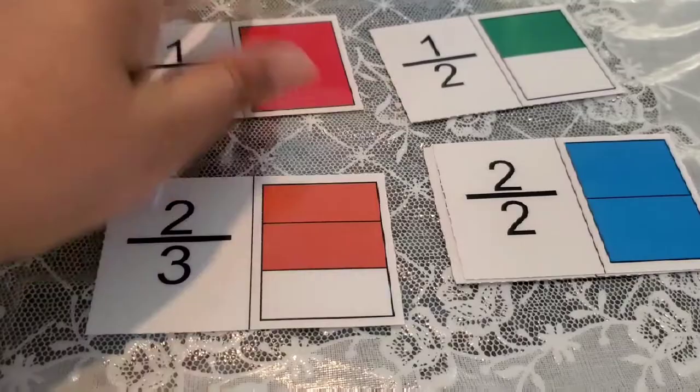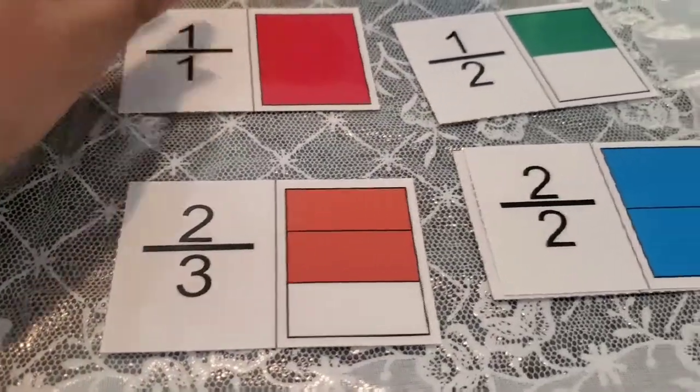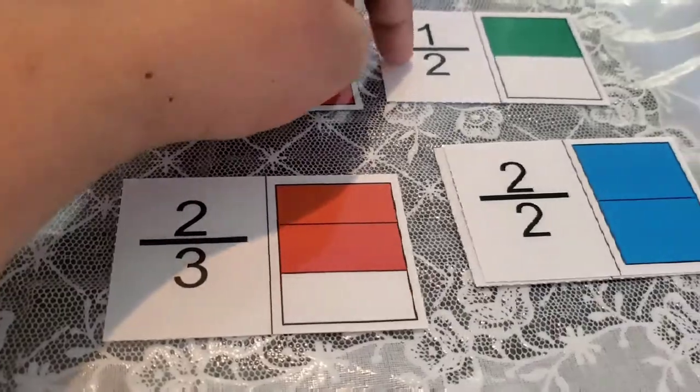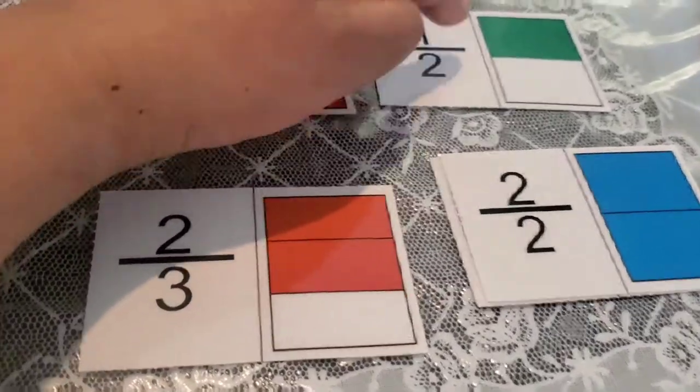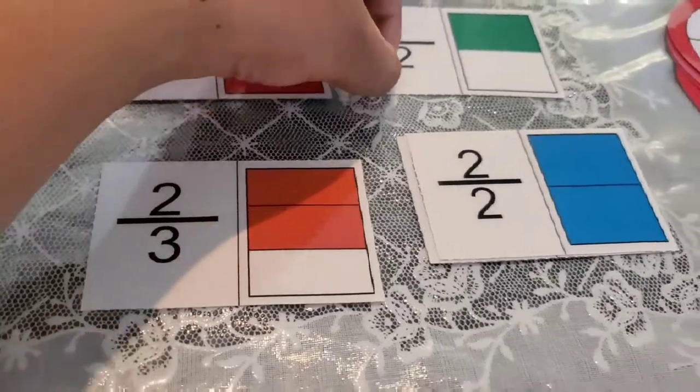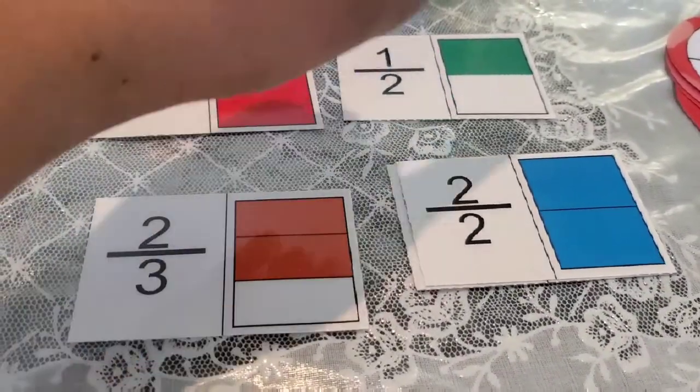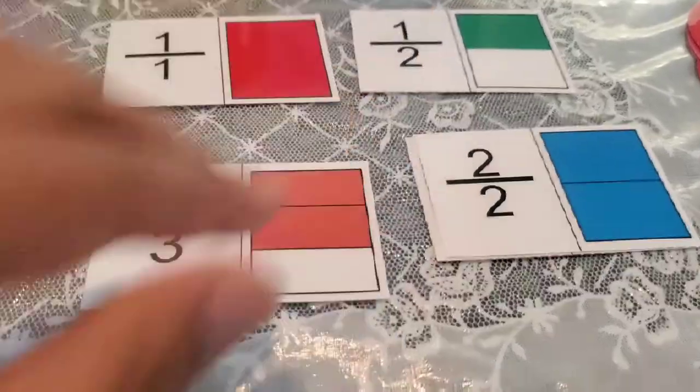And this is showing you half. Now, the bottom number will always tell you how many pieces there are. The top number will tell you which piece is different. So it's telling you one is covered or colored and the other out of the two pieces.